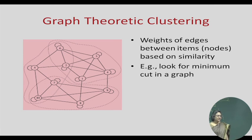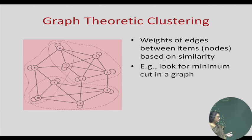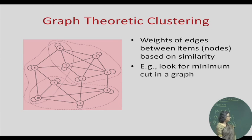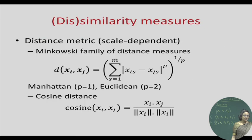Graph-theoretic clustering algorithms take nodes to represent different items, and the weights of edges are based on the similarity of the items. A graph is constructed and certain graph algorithms are used to find strongly connected components — for example, looking for minimum cut in a graph. We will not talk about these types of algorithms in this class.